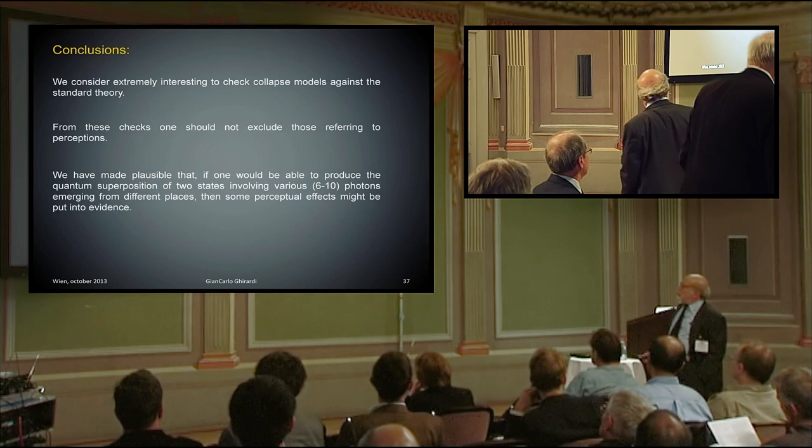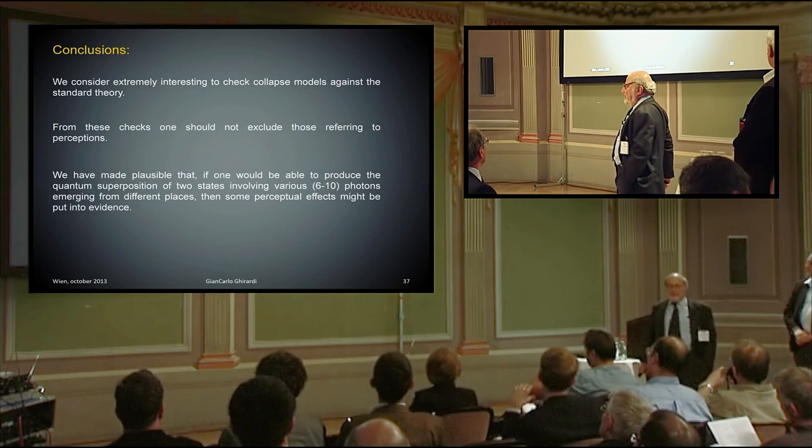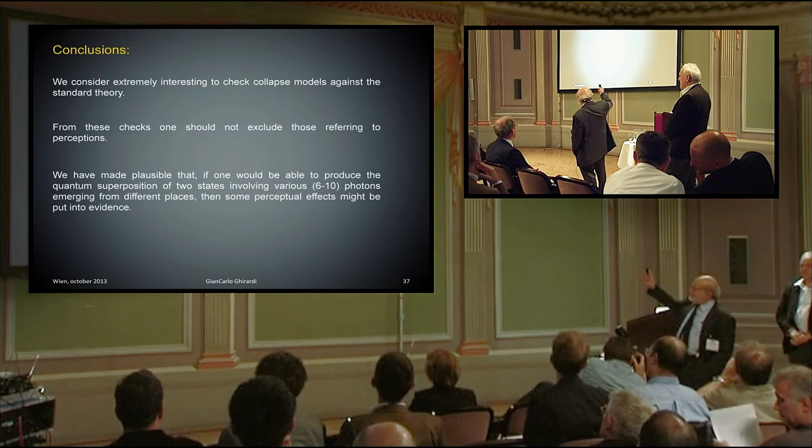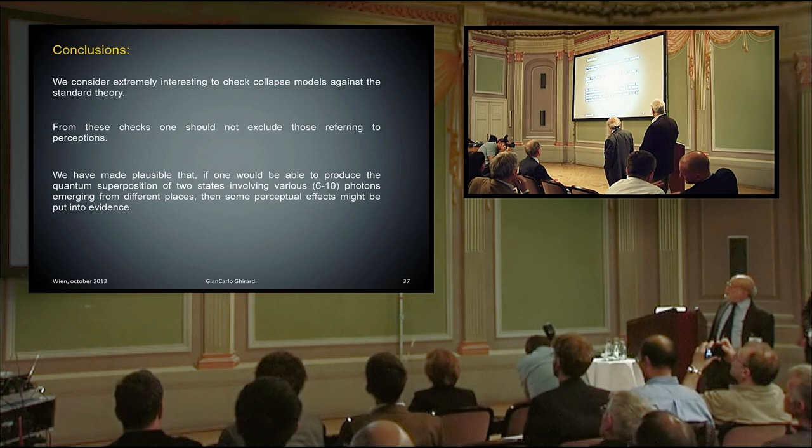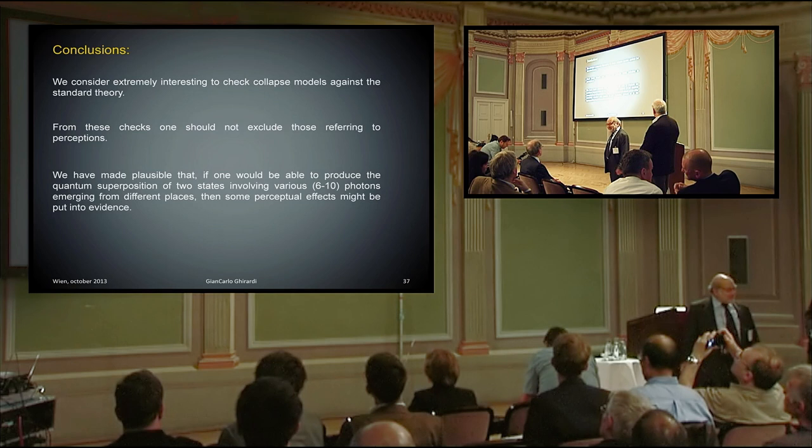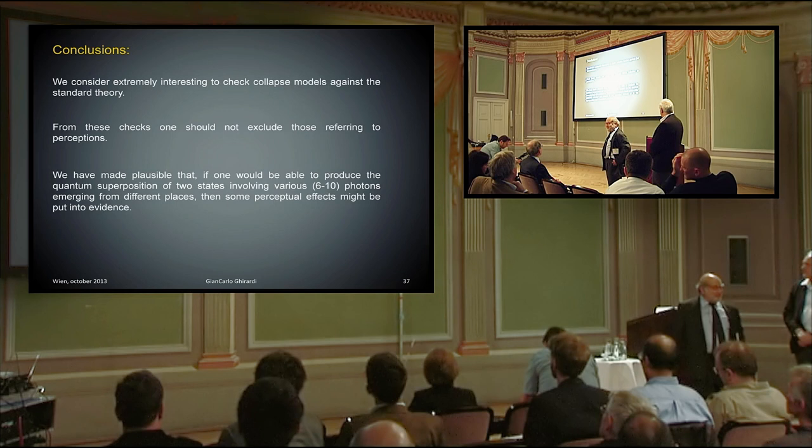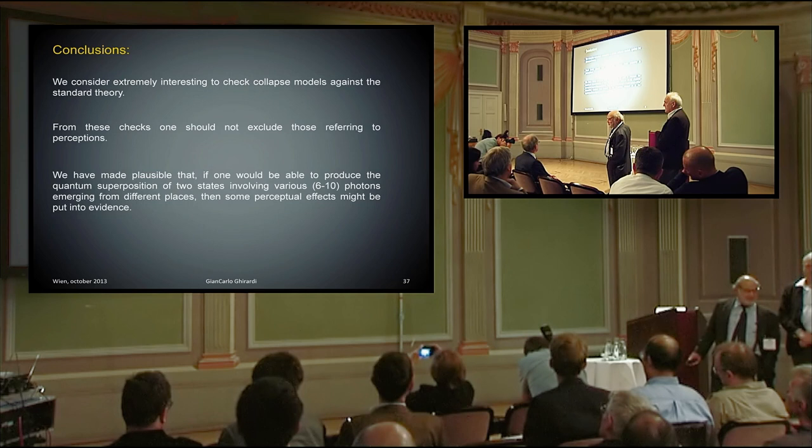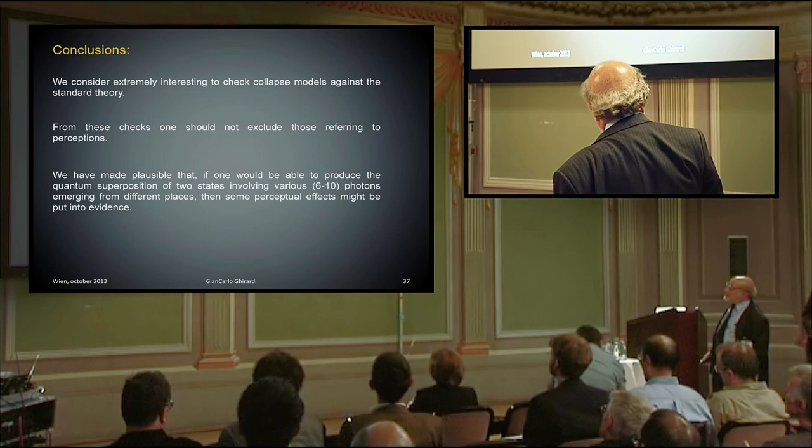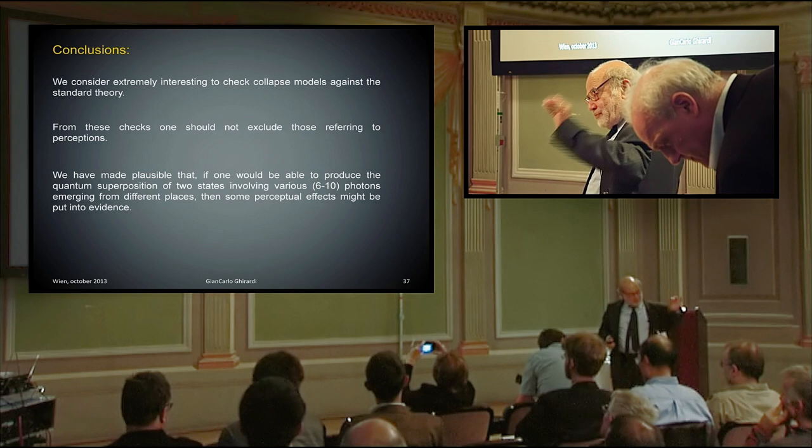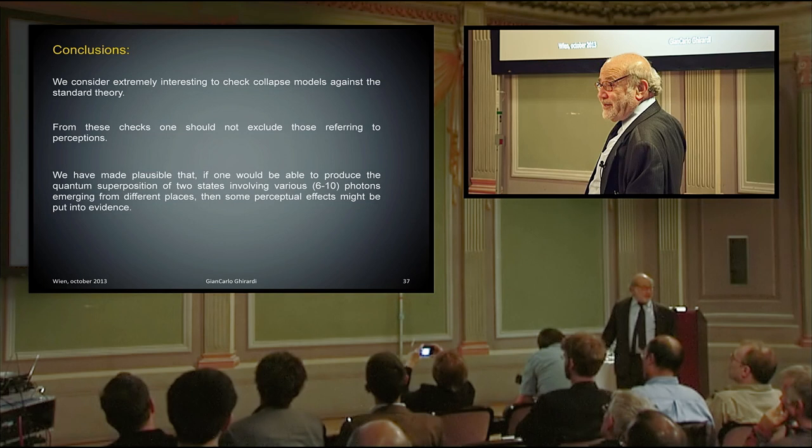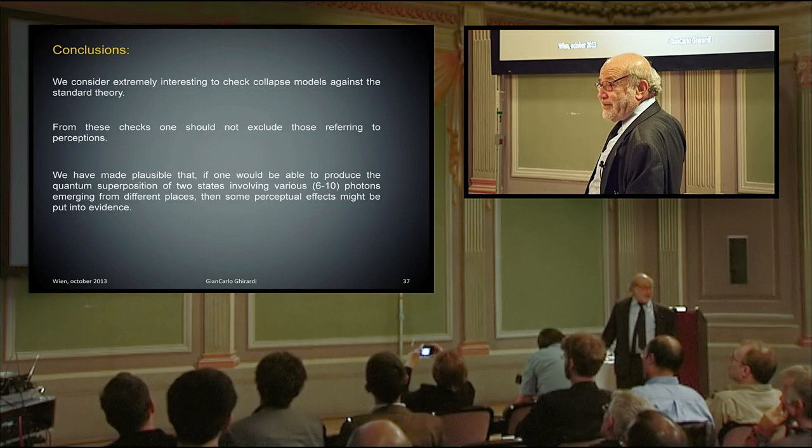So this is more or less the story. And I will conclude. We consider interesting to check collapse models against the standard theory. And the talk by Angelo will be illuminating in this sense because it's not so fantastical as mine. From this check, one should not exclude referring to perception. And we have made plausible that it would be able. And I don't have clear ideas about this. I have discussed at this point many times with Francesco De Martini. He said that it is very easy to make a state which is a superposition of 10 photons from A plus 10 photons from B. But actually, I don't know if experimentally this is feasible. However, if you make this, then some perceptual effect would differ according whether one resorts to the statistical matrix or one triggers with definite spot from A or spot from B or from the superposition of the two might emerge. And this would be another way of putting into evidence that even at the perceptual level, this theory is different from quantum mechanics. Thanks.